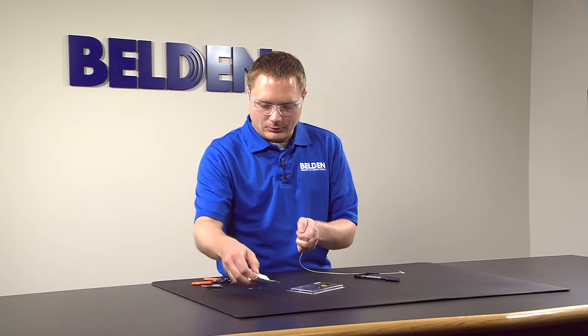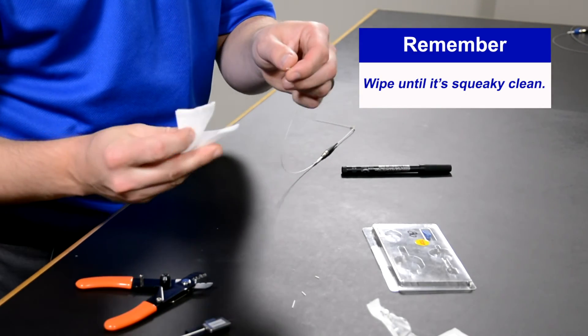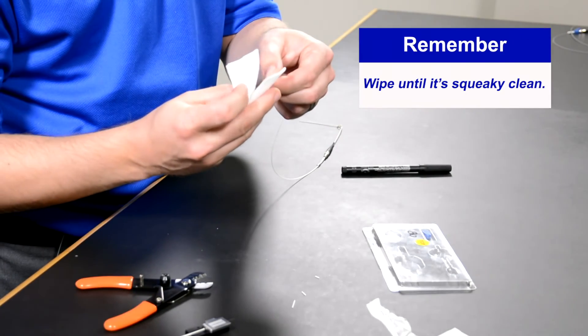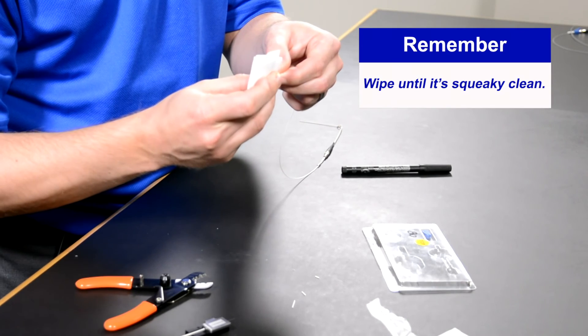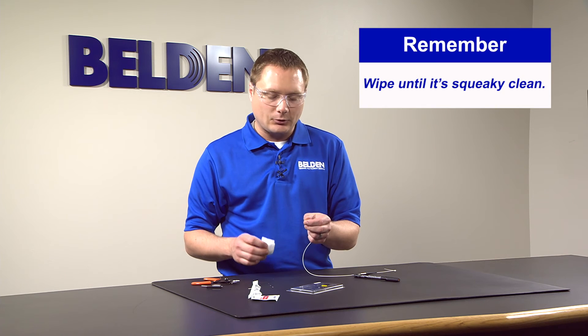We'll take out the alcohol wipe here and wipe that residue clean one way, and then we'll rotate the fiber about 90 degrees and wipe it again until you hear it squeaky clean. Once you hear the squeaky clean feel, then you know you're ready to go.